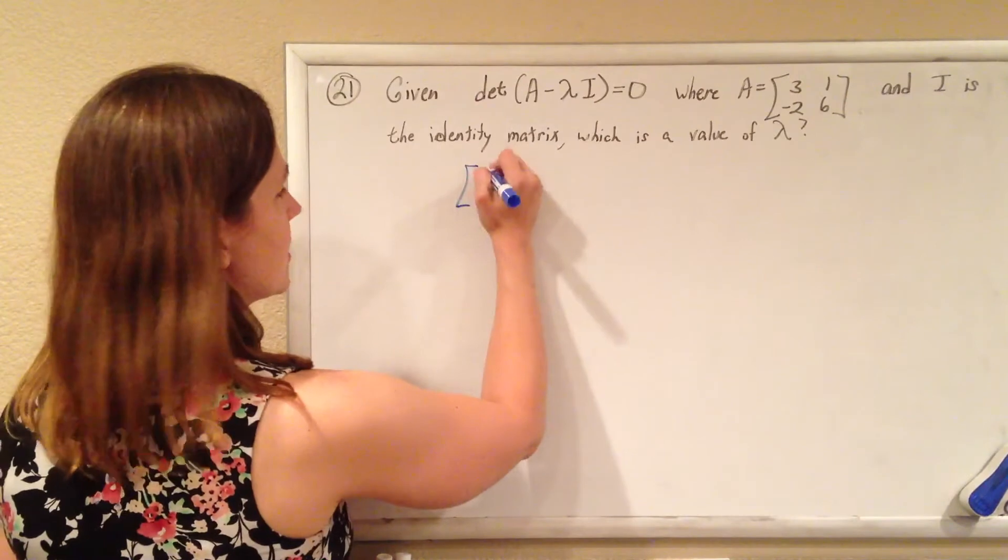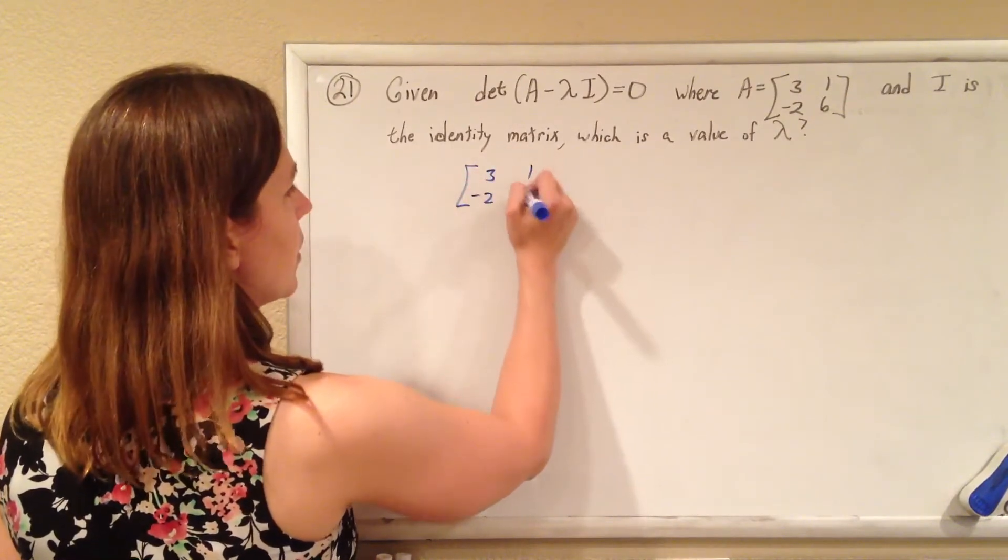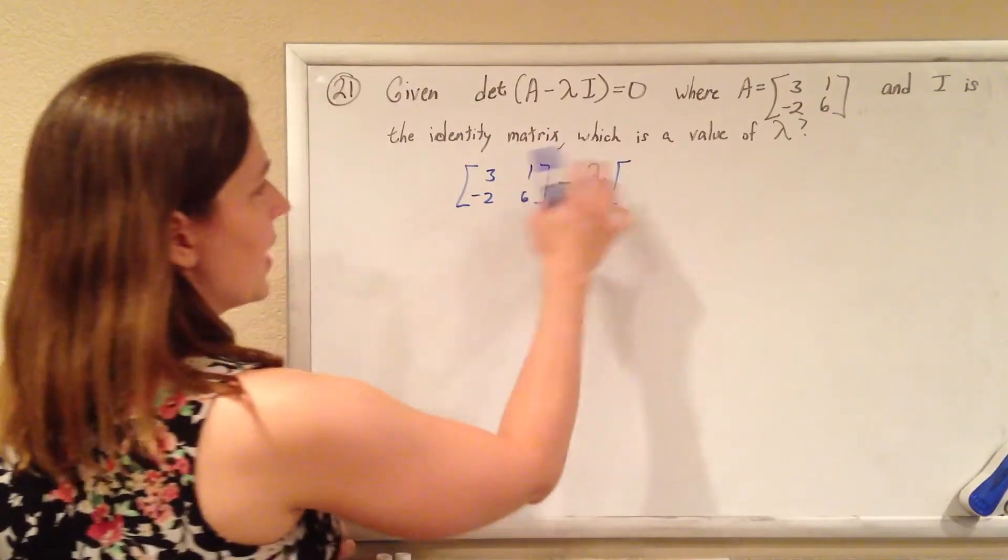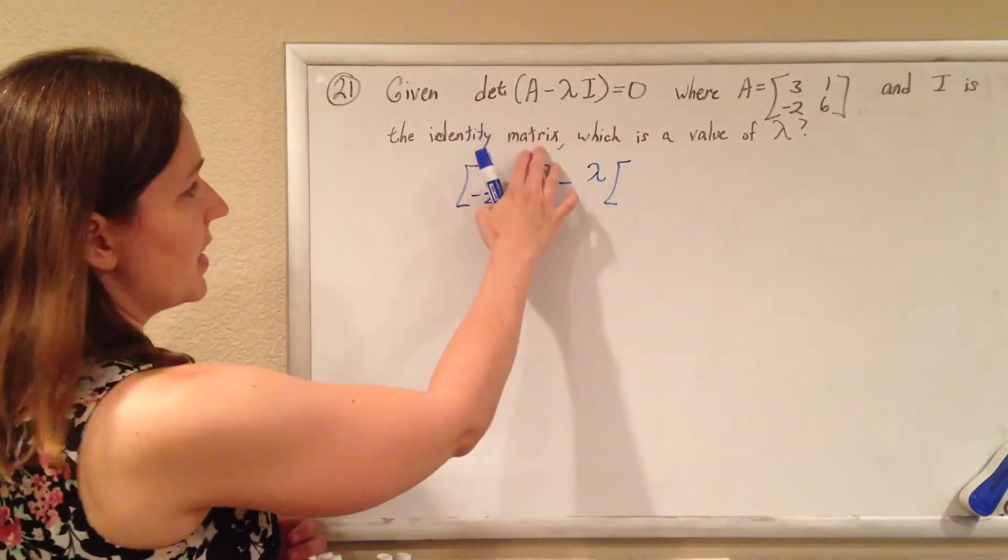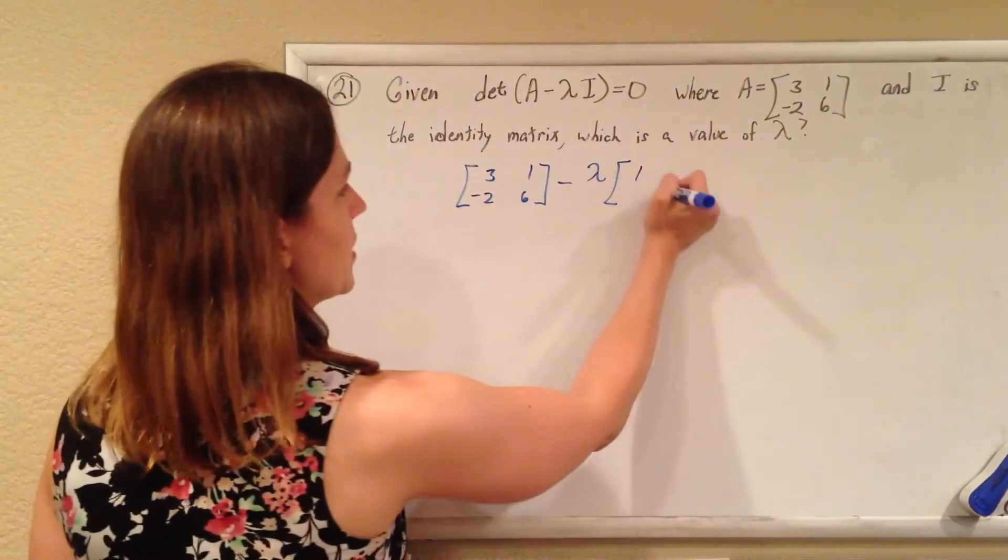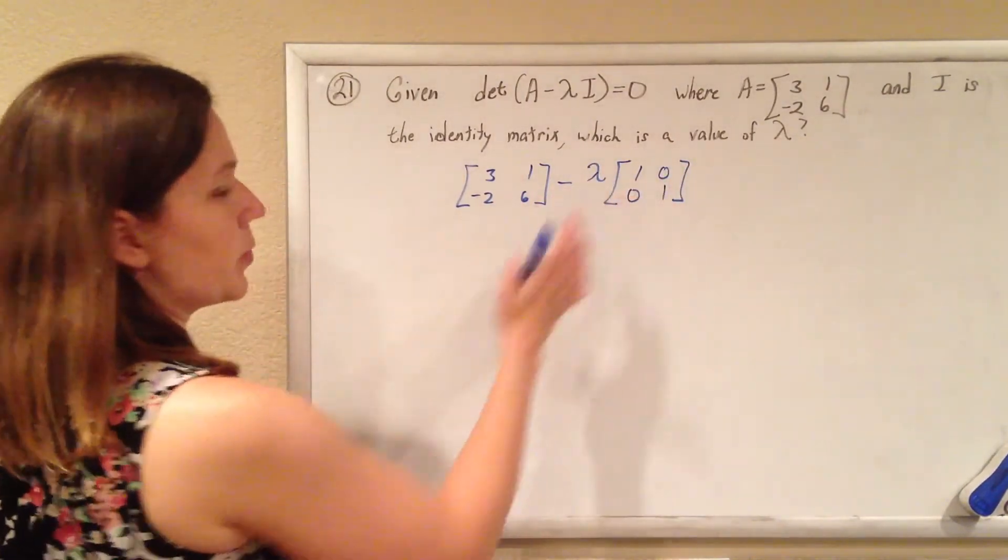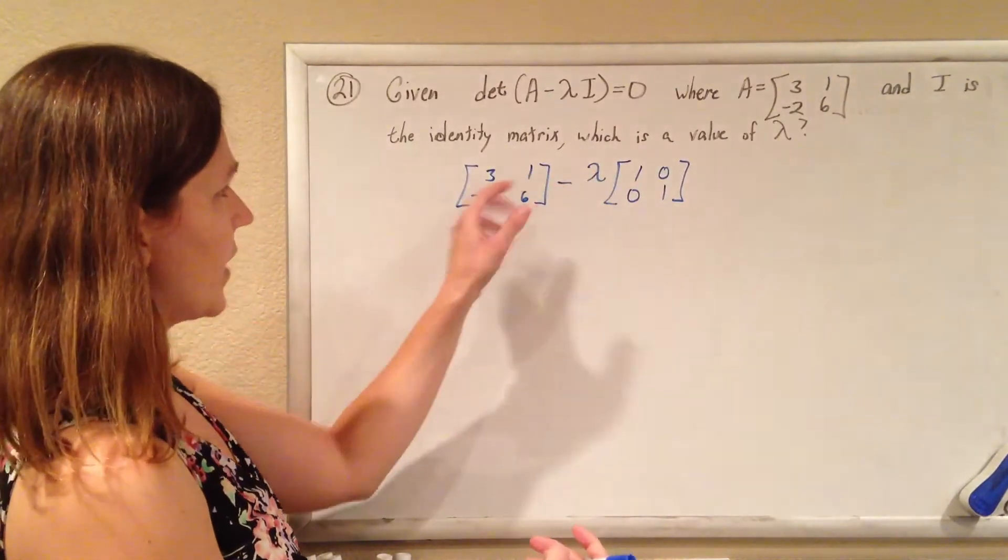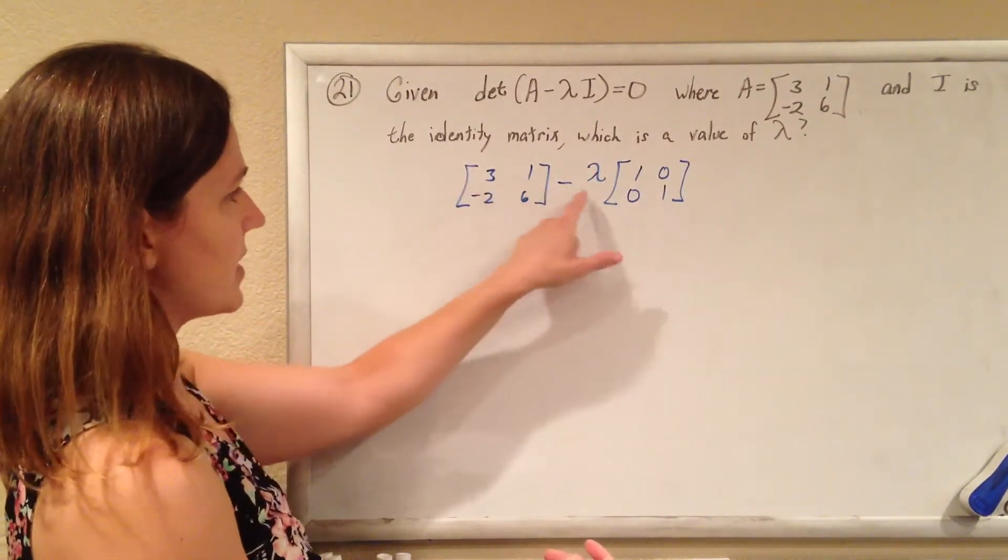So A is 3, negative 2, 1, 6, and if we subtract lambda times I, and they tell us I is the identity matrix, we're assuming the identity matrix for a 2 by 2 matrix, because that's the only way you'd be able to do. So there's your identity matrix. So we've got A minus lambda I.